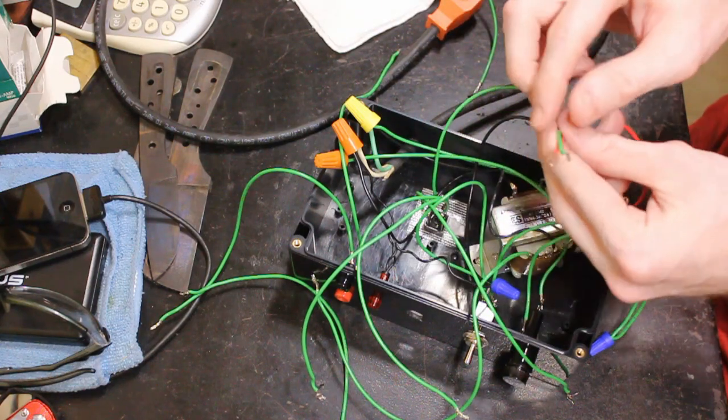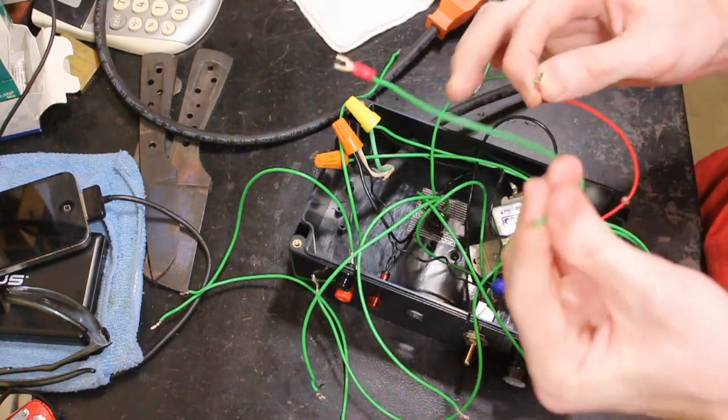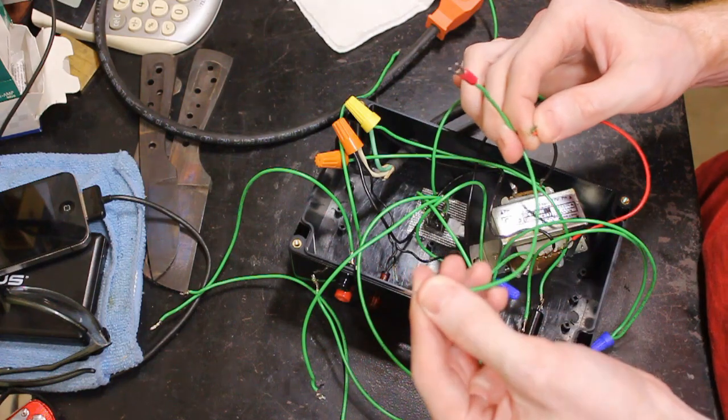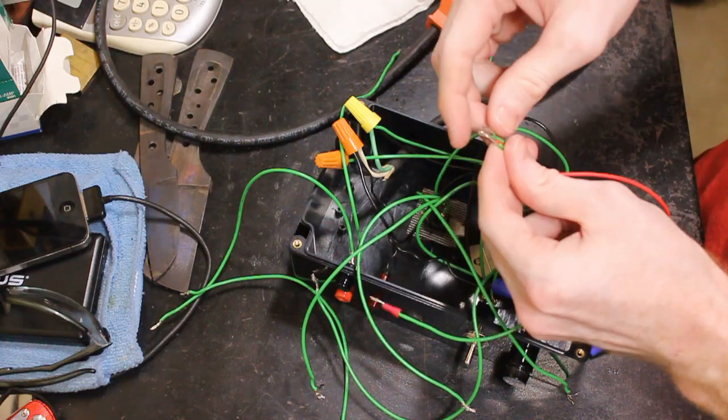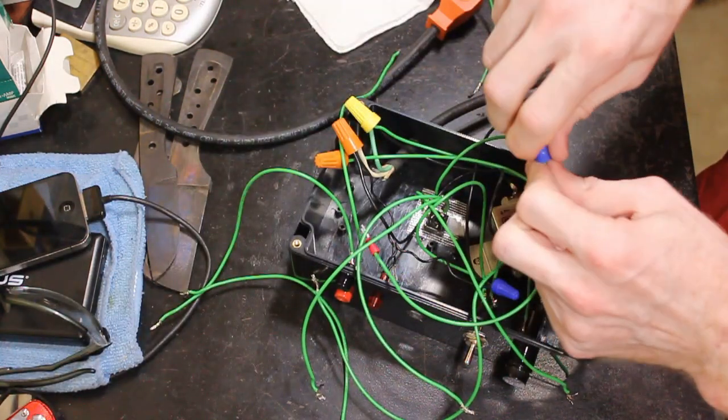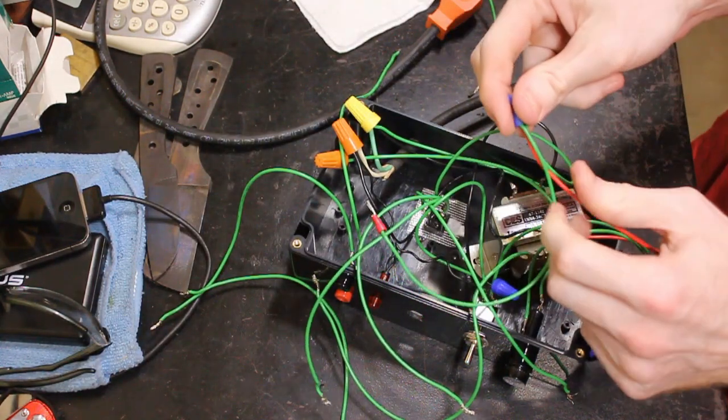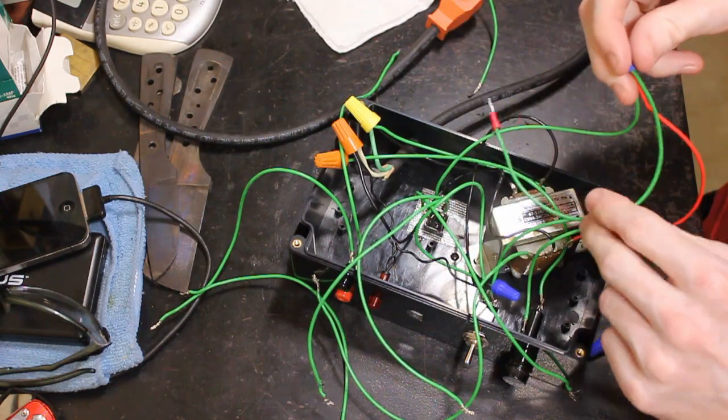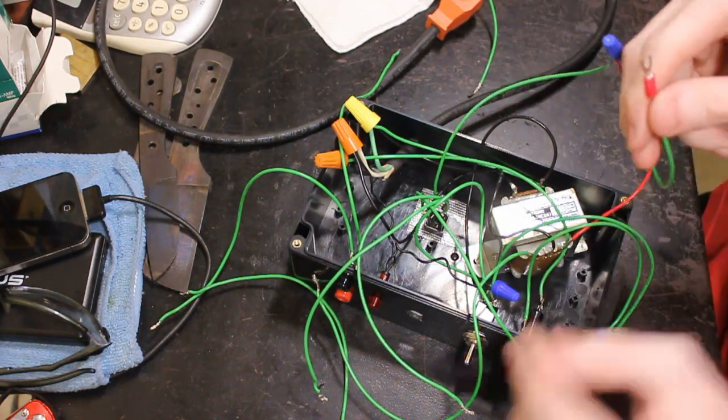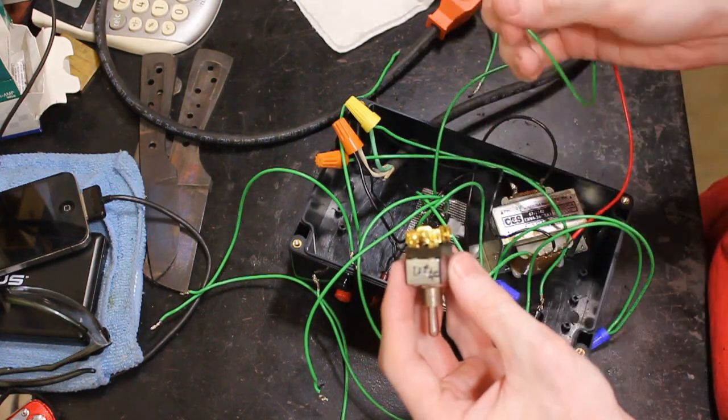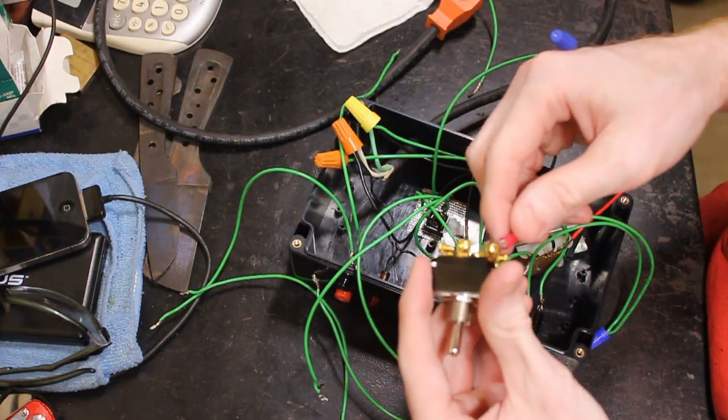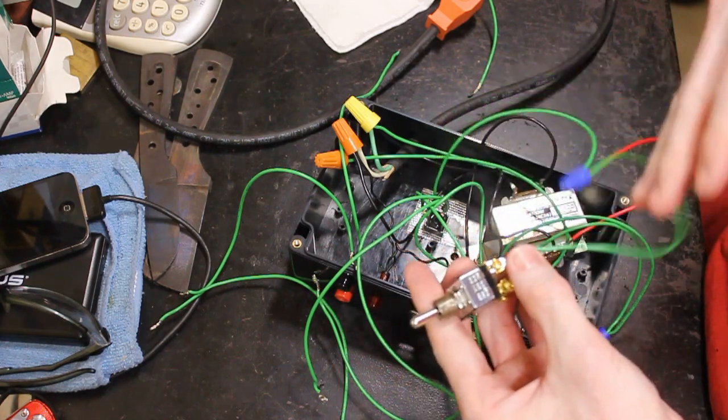And then we're going to grab another lead that will go to one side of our switch. So we'll put these three together. And then we'll tie this in to our switch here. We'll tie it into the bottom post. So this guy right here, or one of the bottom post.